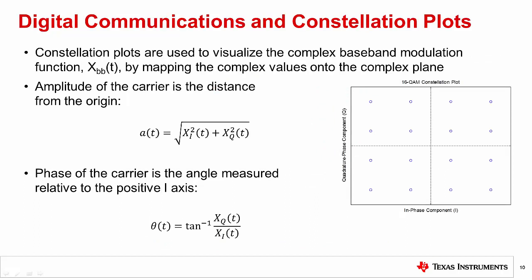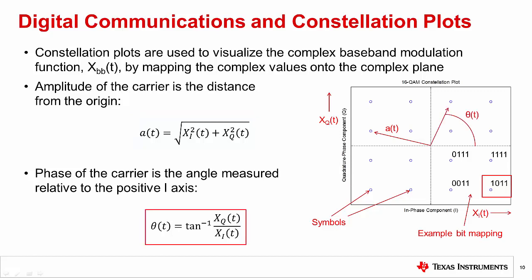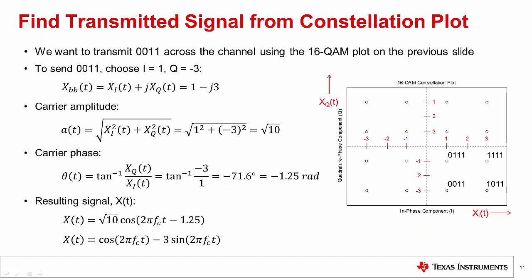Digital communications uses discrete I and Q values to form symbols. A common way to visualize the complex symbols is the use of a constellation plot, such as this example plot for 16QAM. The plot maps symbols onto the complex plane. The x-axis represents the magnitude of the real I component, while the y-axis represents the magnitude of the imaginary Q component. Each symbol maps to a sequence of bits in order to transmit information. In the example plot, the bit sequence 1011 maps to the bottom right symbol, represented by the most positive I and most negative Q values.